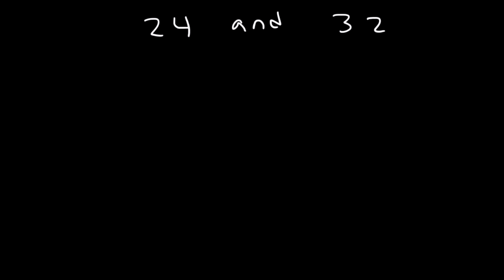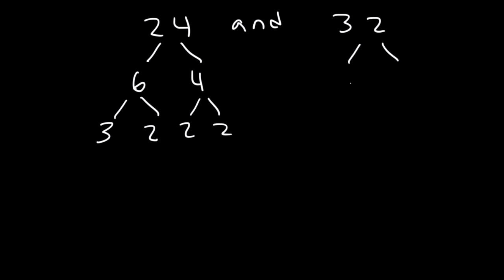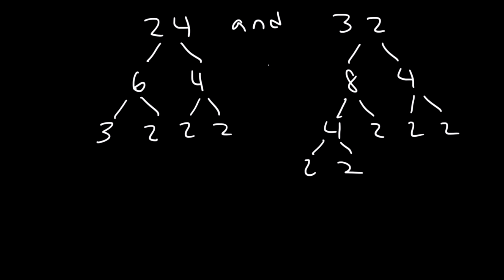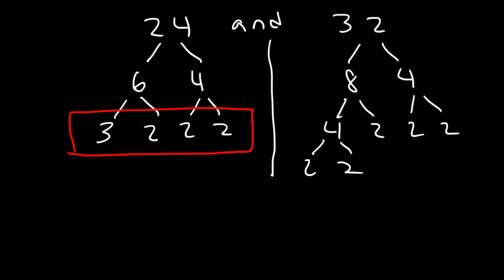Now let's move on to our next example: 24 and 32. Build a list and also use prime factorization to get the same answer. Factors of 24 are 6 and 4; factors of 6 are 3 and 2, and factors of 4 are 2 and 2. Factors of 32 are 8 and 4; factors of 8 are 4 and 2, and 4 is 2 and 2. So the prime factors of 24 are 3, 2, 2, 2, and for 32 it's five 2s.